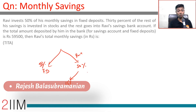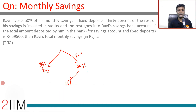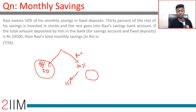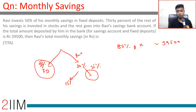The total amount deposited by him in the bank for savings account and fixed deposit is 59,500. This total is 50 percent plus the remaining 35 percent, so 85 percent of x equals 59,500.